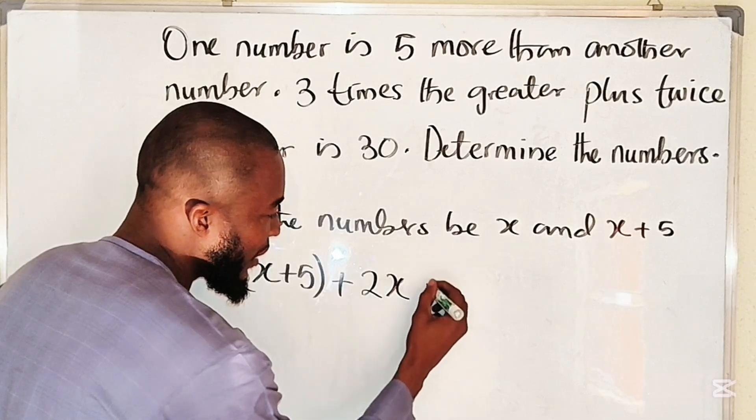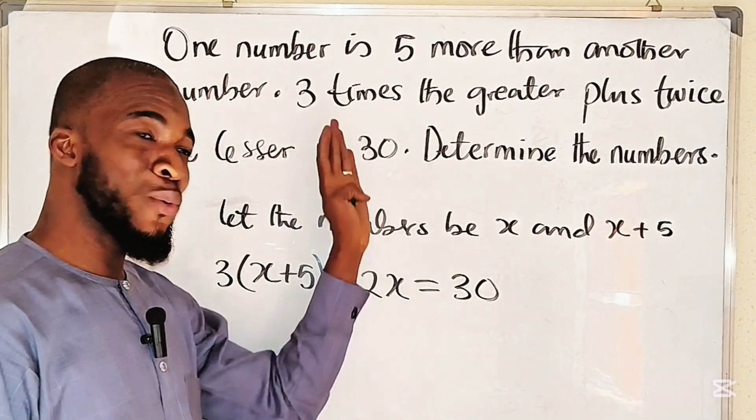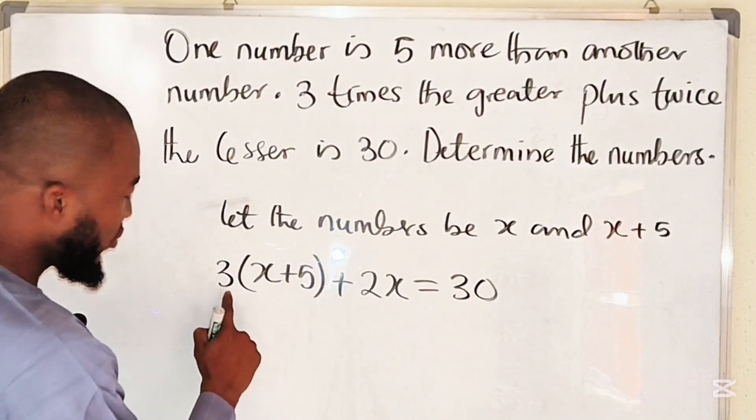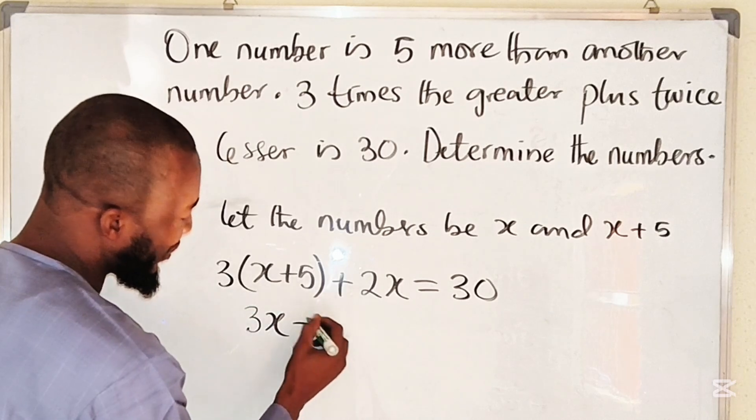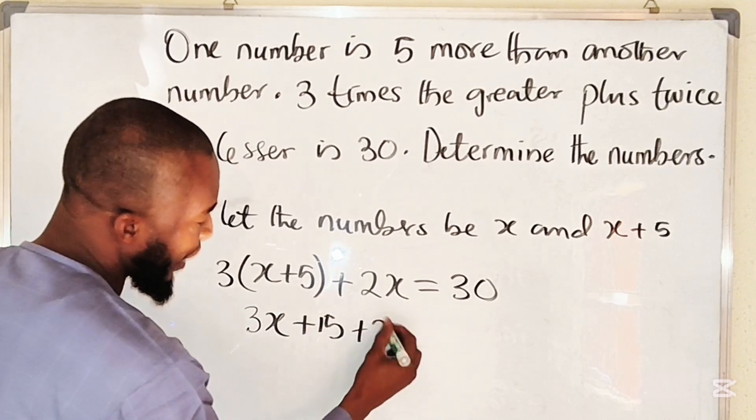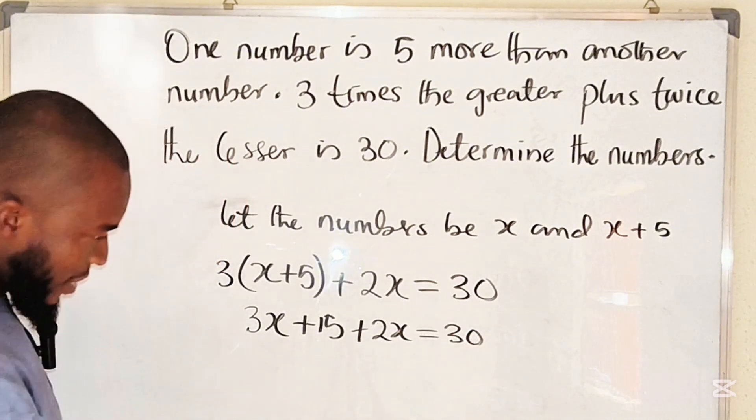So we have just interpreted the words into a mathematical statement. Let's distribute. This is 3x, 3 times 5 is 15, then plus 2x. This is equal to 30.